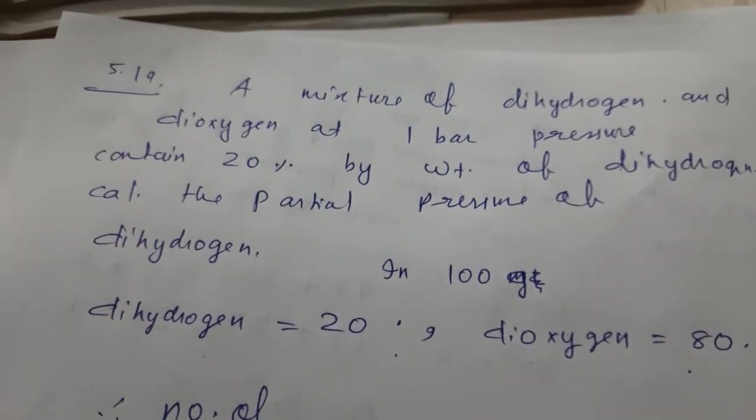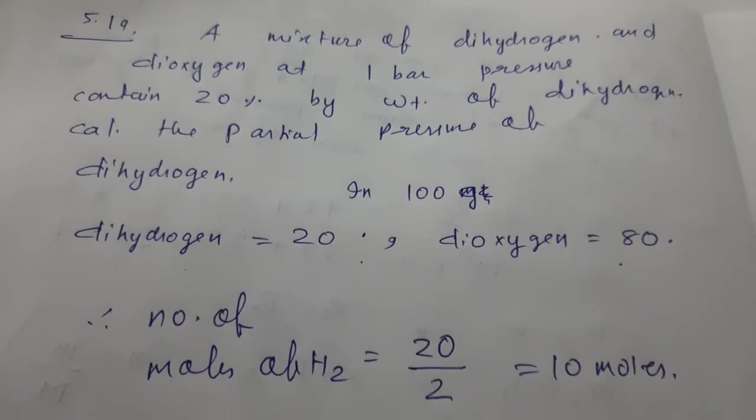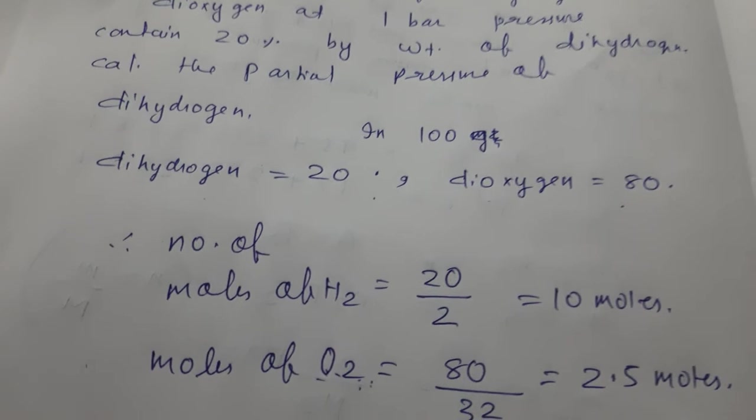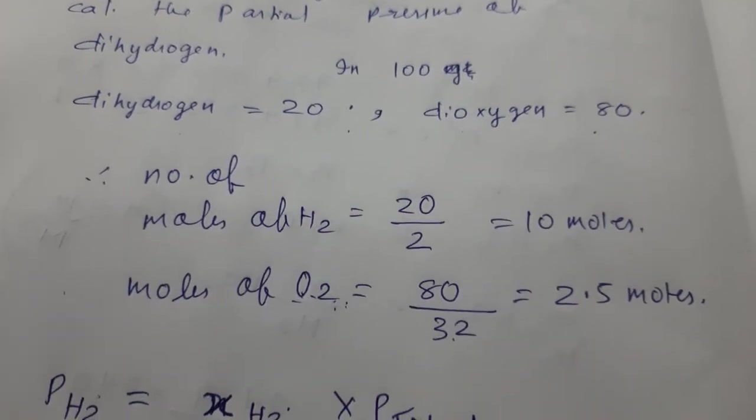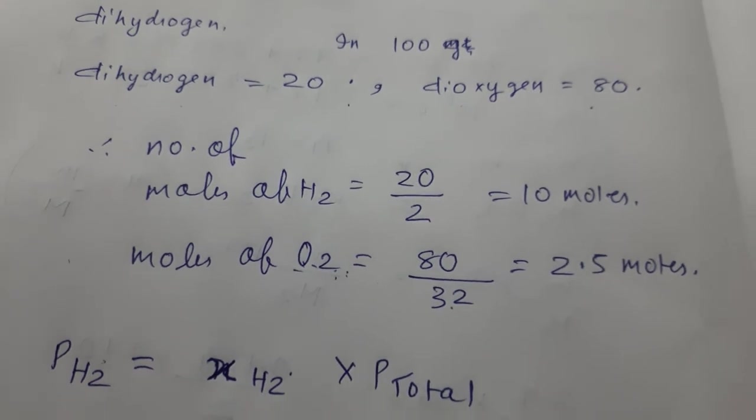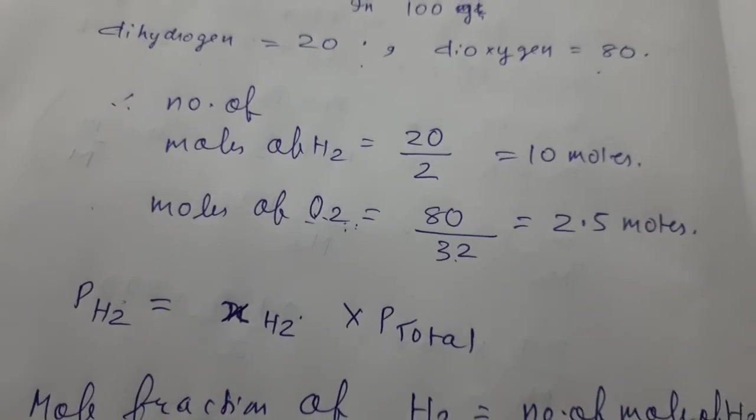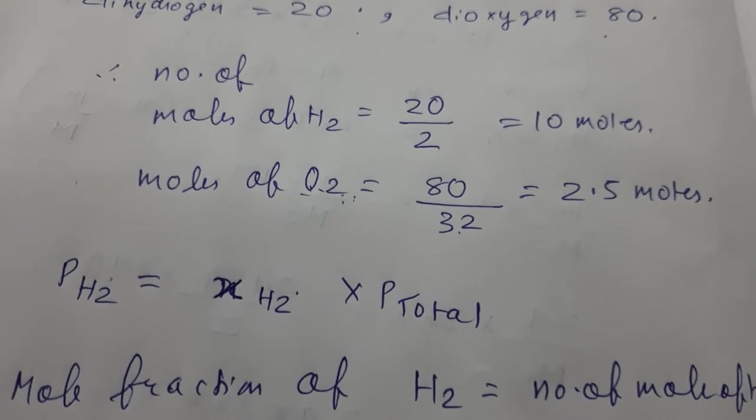It's a mixture, 20 percent by weight of dihydrogen. So if 20 percent dihydrogen is there, dioxygen will be 80 percent. So 20-80 ratio. Calculate moles of H2: 20 divided by molecular mass of H2. Atomic mass is 1, so molecular mass is 2 times 1, equals 2. 10 moles.